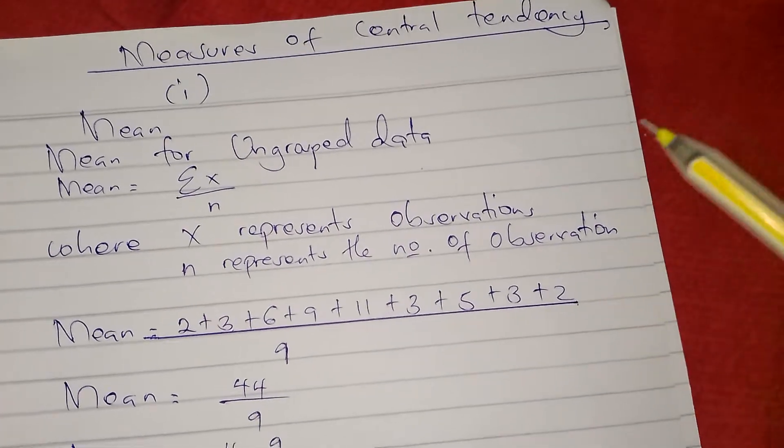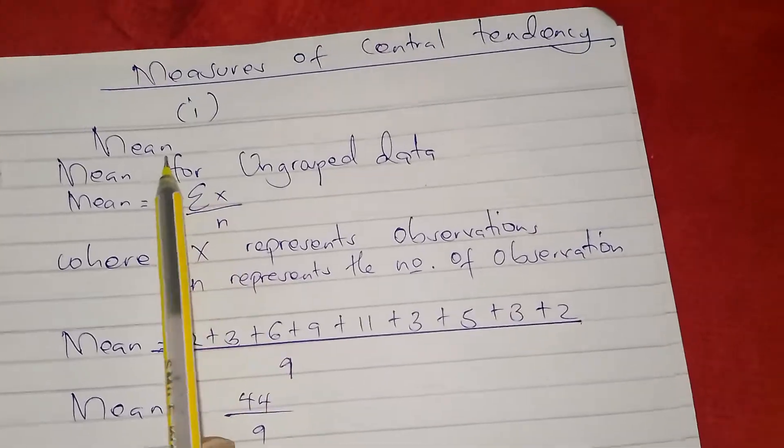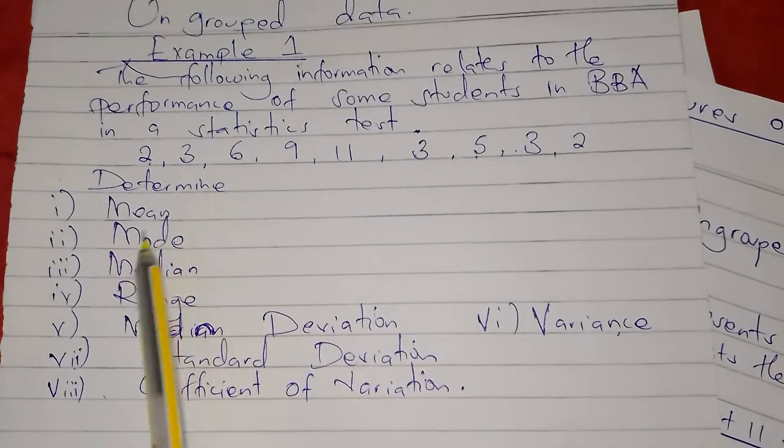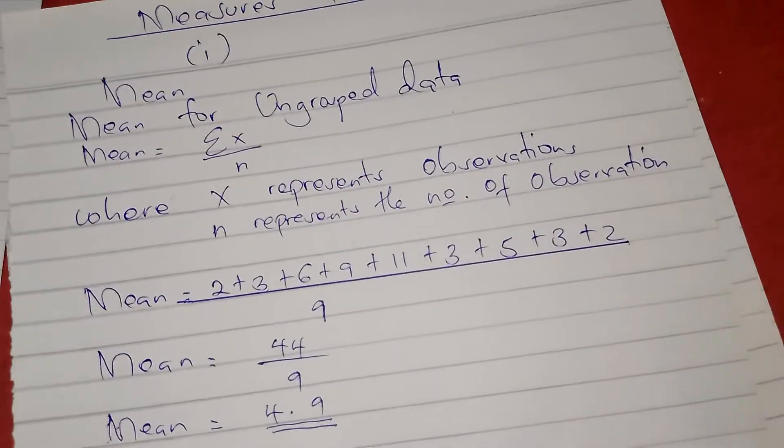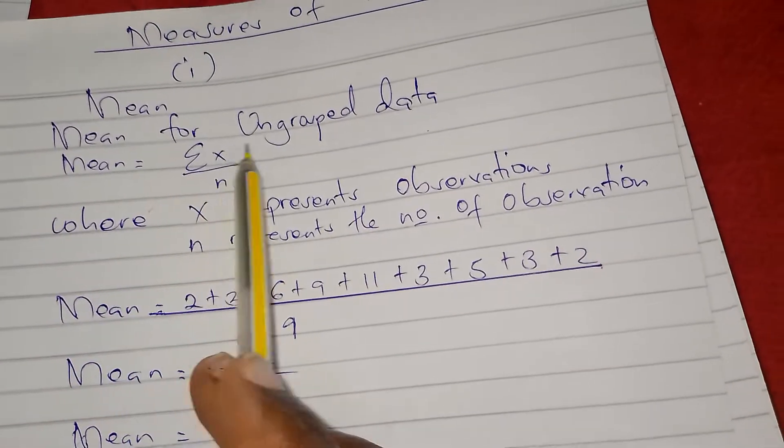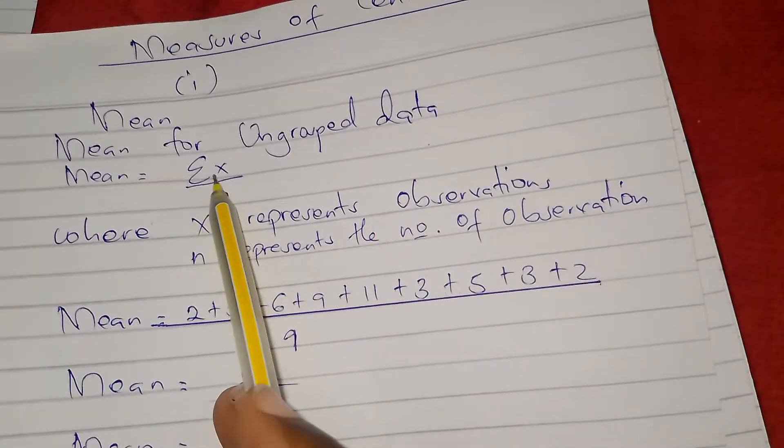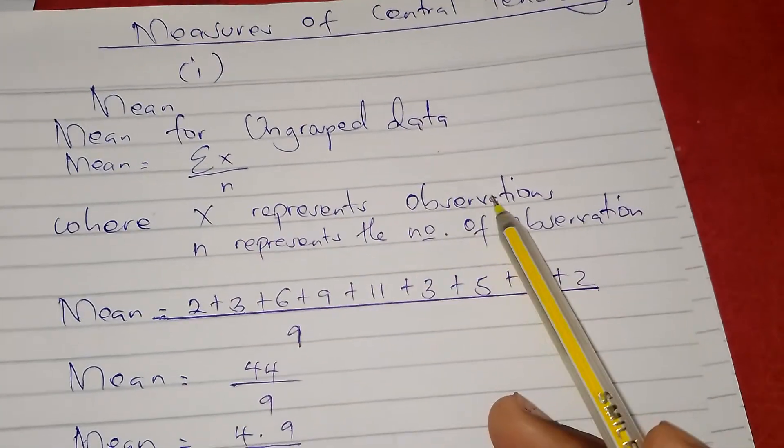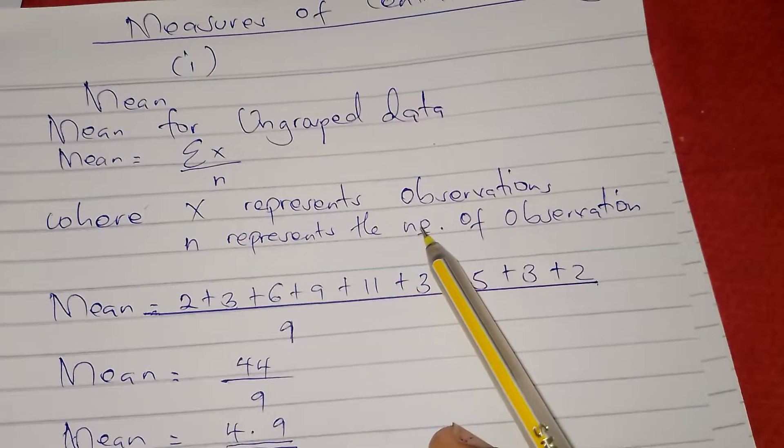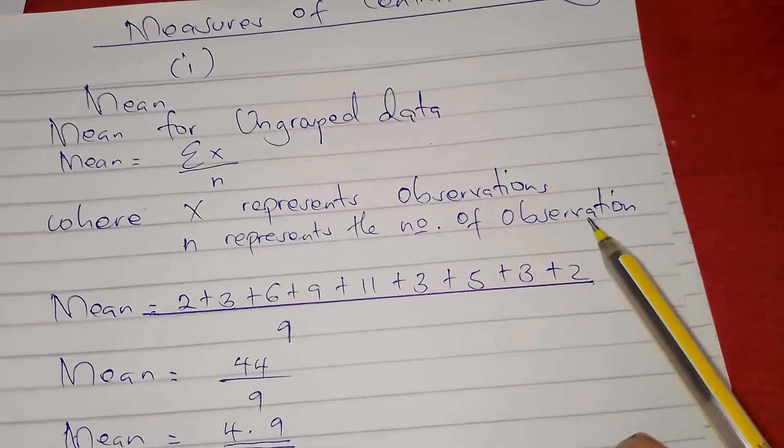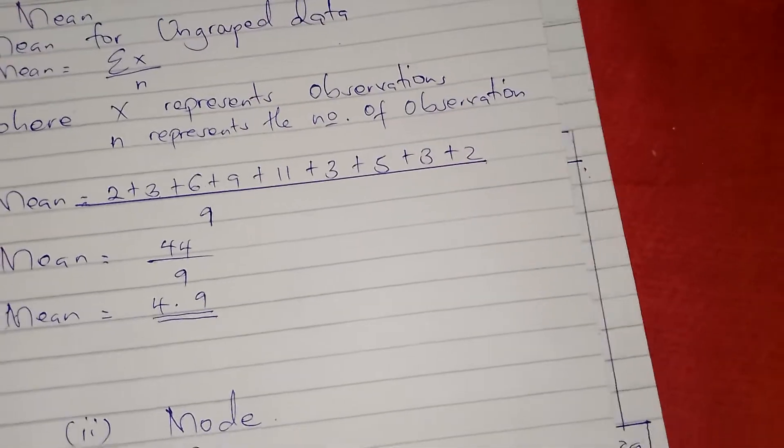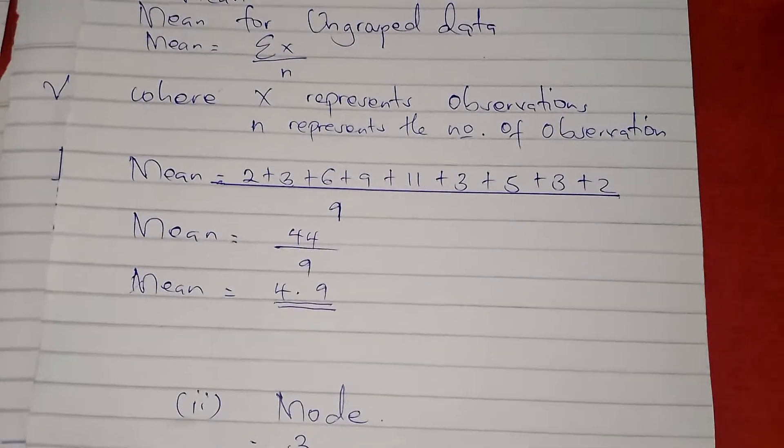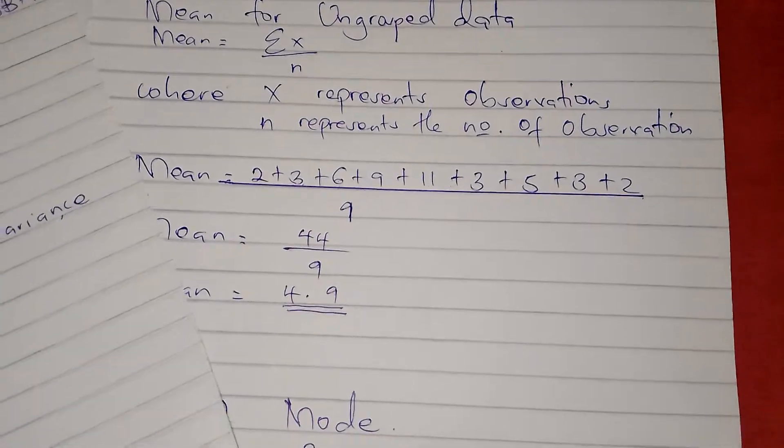Roman one: they wanted us to determine the mean. The formula for mean for ungrouped data is summation x out of n, whereby x represents the observations and n represents the number of observations. According to the question, the marks that they gave us are the ones that we call x.